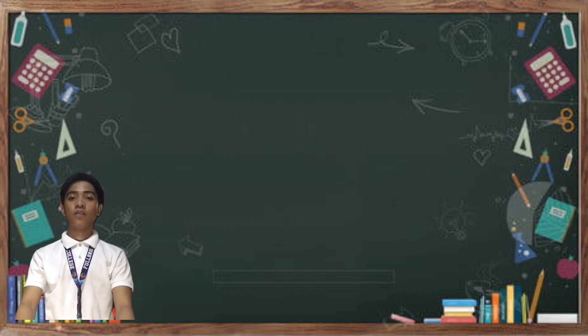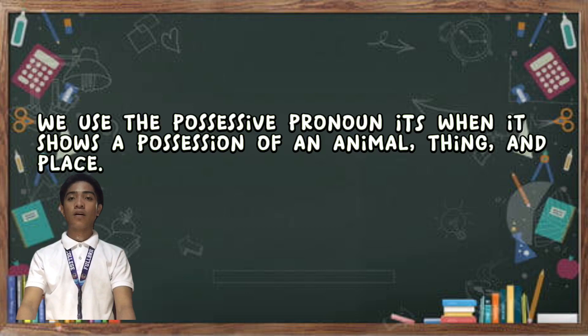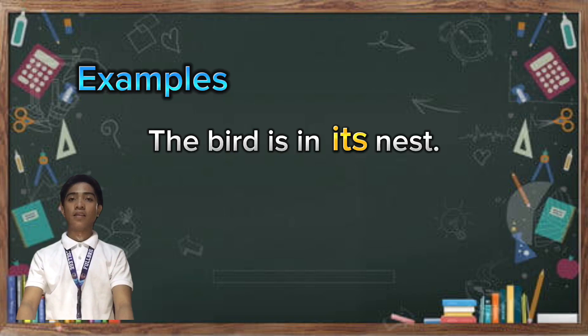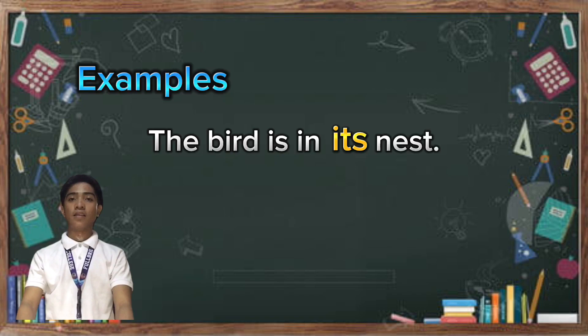For the last example, we have the possessive pronoun 'its.' We use 'its' when it shows a possession of an animal, thing, or even a place. Here are the examples: 'The bird is in its nest.' and 'The fish is so small for its aquarium.'